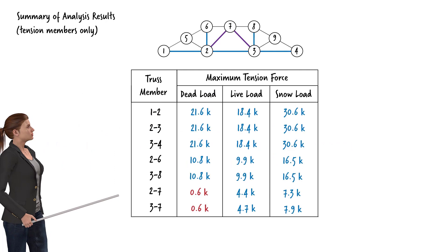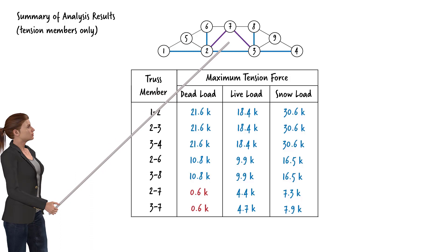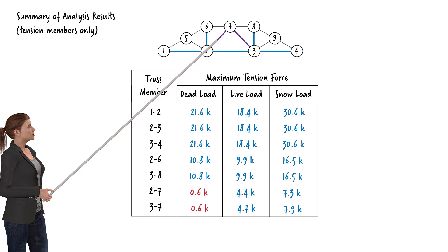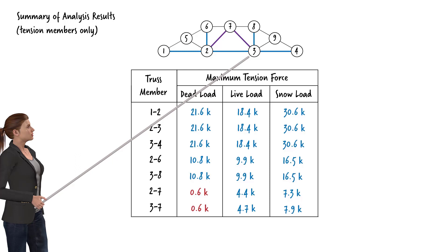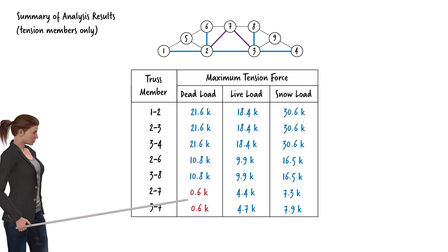Here is a summary of the analysis results. The members shown in blue remain in tension under all three loading cases. The diagonal members shown in purple are in tension for some load patterns and in compression for other load patterns. As shown previously, when the pedestrian or snow load acts at joint 2 only, this member carries a tensile force; otherwise it is in compression. The table shows the maximum tensile force in each member under each load type. Note that the two diagonal members carry a compressive force of 0.6 kips under dead load.